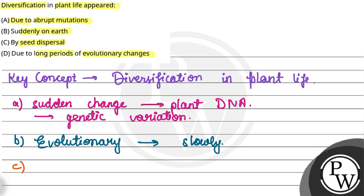Option C है — by seed dispersal. Seed dispersal का mechanism यह contribute करता है कि plant species अलग-अलग environments में spread हो जाए, अलग-अलग environment में फैल जाए — इसी को diversification कहते हैं। तो seeds plant species को new environments में spread करते हैं।